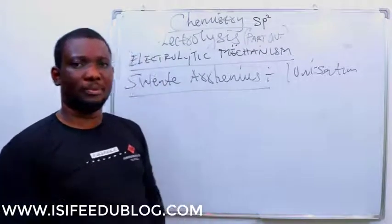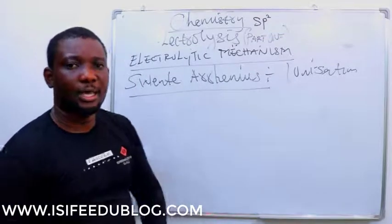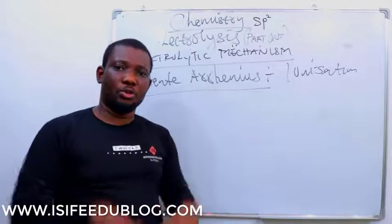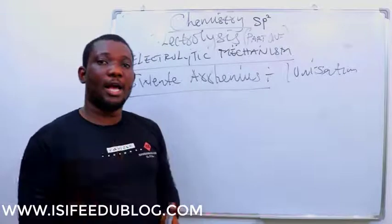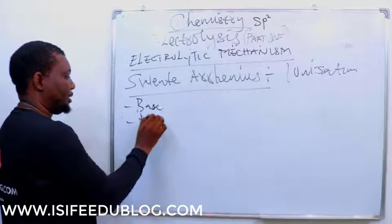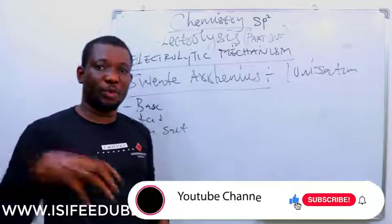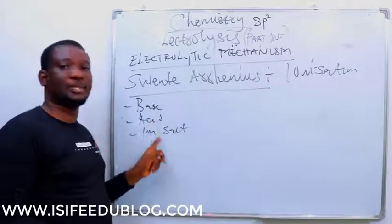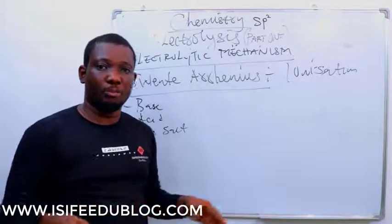In his concept of ionization, Svante Arrhenius states that electrolytes — whenever an ionic compound, a base, an acid, or ionic salts dissolve in water, whenever they have contact with water, the ions present in these substances will dissociate. The ions will break up into two ions.